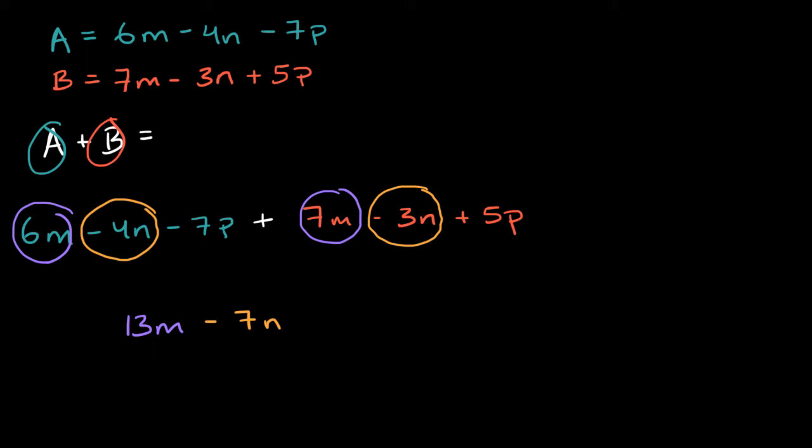And then last but not least, we have, we could say negative 7P, and then we are going to add 5P to that. So if you start at negative 7P and then add 5P, you're going to get to negative 2P. Another way you could think about it, you have 5P and we're subtracting 7P from that, you're now going to have negative 2P.